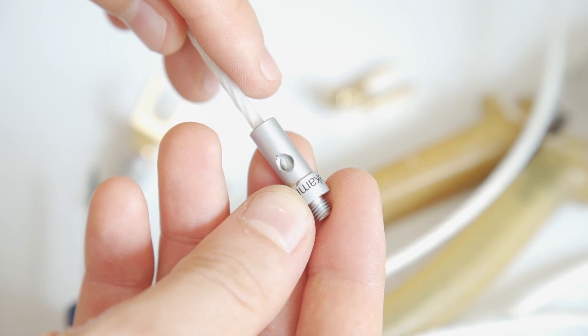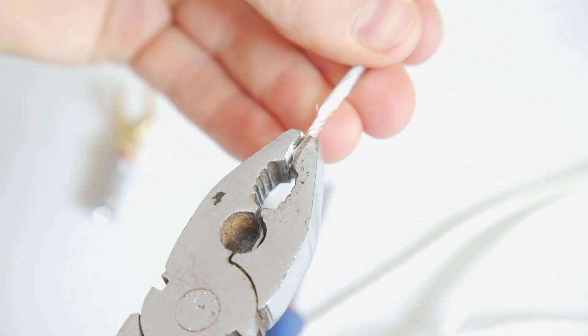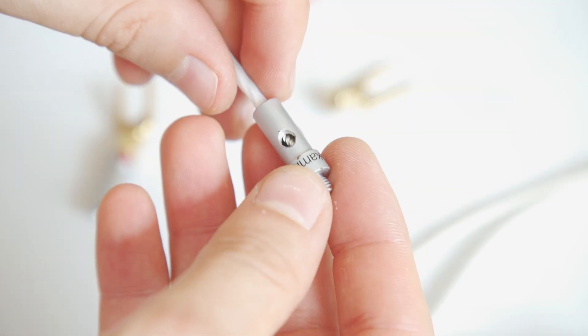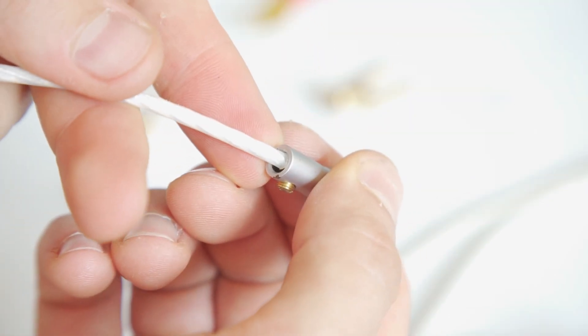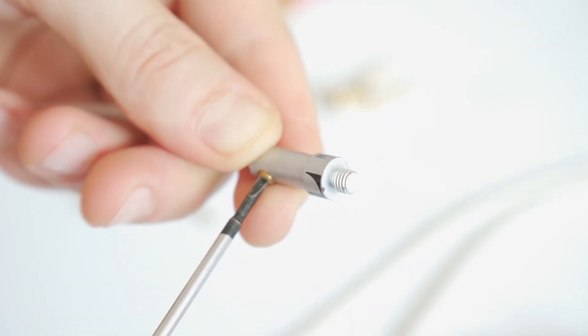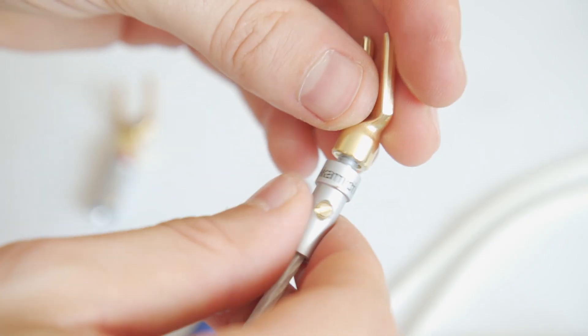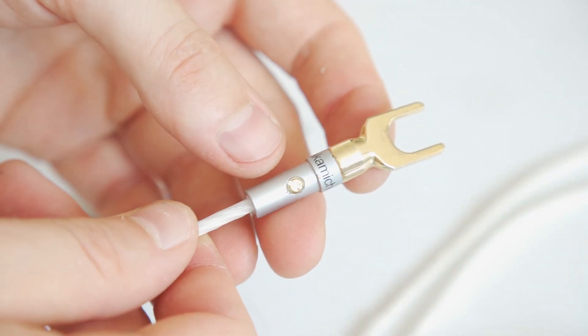Next, unscrew the plug and measure how much outer jacket needs to be removed. Carefully remove it, twist the copper wires tightly, insert wire into the plug, and make sure the metal screws inside the plug press directly on the wires, not on the insulation. Tighten the screws well for a solid connection. Reassemble the plug, and now one side of the jumper cable is done.